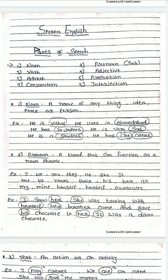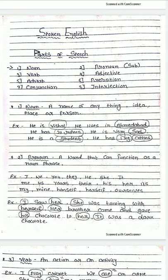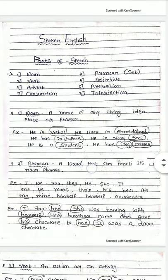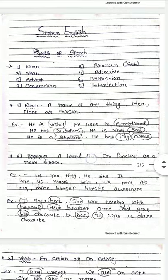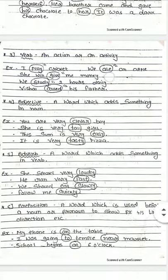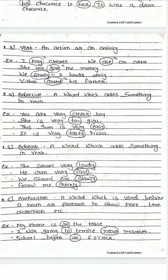Maine use dekha, vo apne aap se baatein kar rahi thi. Next example: 'Her brother came and gave his chocolate to her' — uska bhai aaya aur usne apni chocolate use de di. Here, her and his are pronouns. 'It was a dark chocolate' — it is also a pronoun.